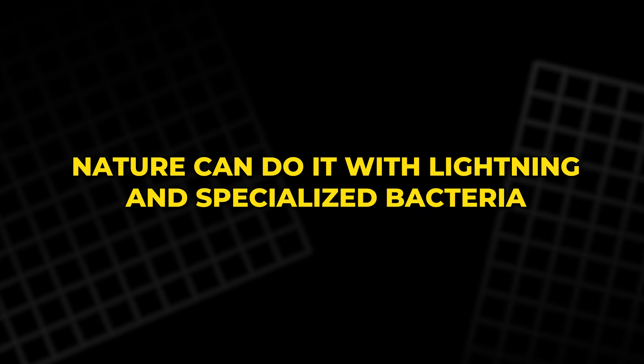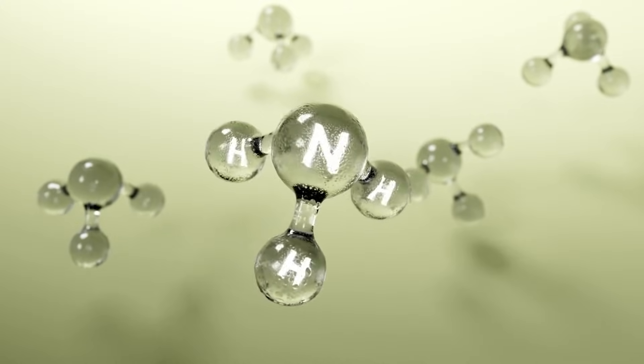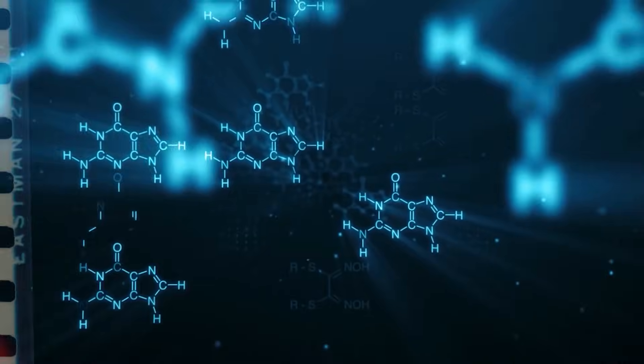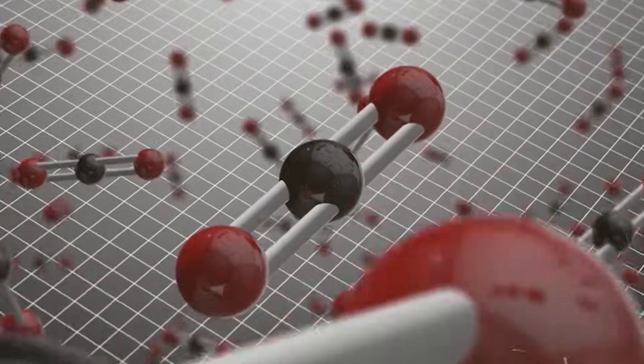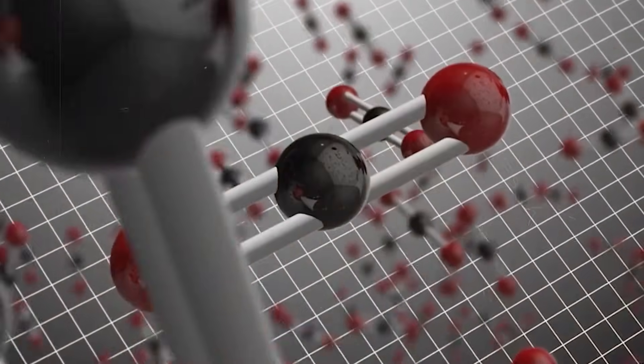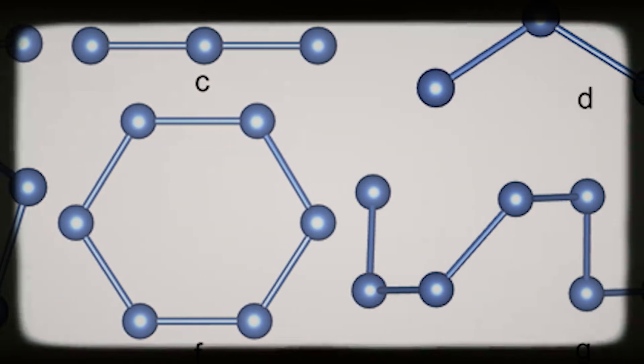Nature can do it with lightning and specialized bacteria. Industry does it with the Haber-Bosch process to make ammonia, using high pressures and heat. So nitrogen is essential for life, yet stubbornly locked in its safest form. That locked door is exactly why a new nitrogen-only molecule is such a big deal, because it suggests we can unlock nitrogen in a totally different way.